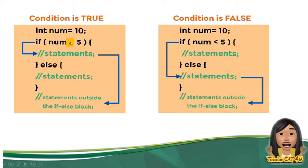10 is greater than 5, so therefore it will execute this statement. After it performs the true block of code, it will automatically skip the else function — because the else function is only for the false condition. So it will not go down to the else part; it will exit.